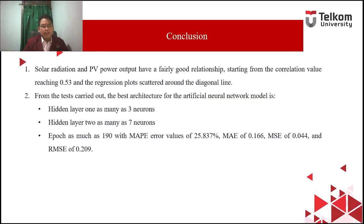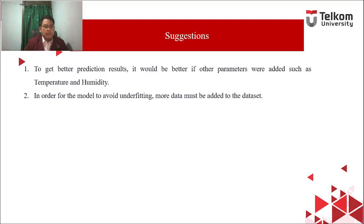Our findings show that solar radiation and PV power output have a fairly good relationship, with the correlation value reaching 0.553 and the regression plot scattered around the diagonal line. The best ANN architecture is hidden layer 1 with 3 neurons, hidden layer 2 with 7 neurons, and 190 epochs, achieving a MAPE of 25.837%, MAE of 0.166, MSE of 0.044, and RMSE of 0.209. To get better prediction results, it would be better to add other parameters such as temperature and humidity, and more data should be added to the dataset to avoid underfitting.